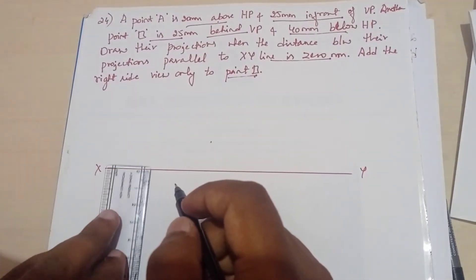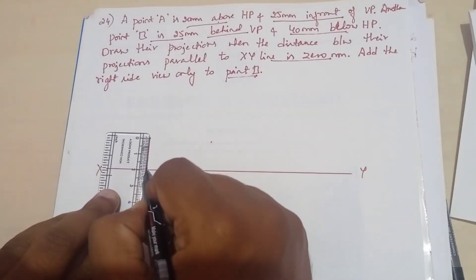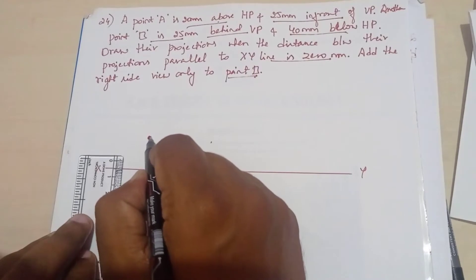First, I'm starting with point A. 20 mm above HP - above HP means it is a front view, so it is a front view.